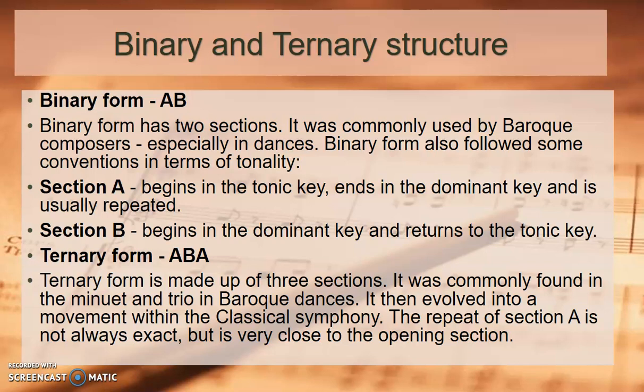Section B begins in the dominant key — now G major — and then returns to the tonic key, C major. Ternary form (A, B, A) is made up of three sections. It was commonly found in the minuet and trio in Baroque dances, and then evolved into a movement within the classical symphony. The repeat of section A is not always exact, but is very close to the opening section.